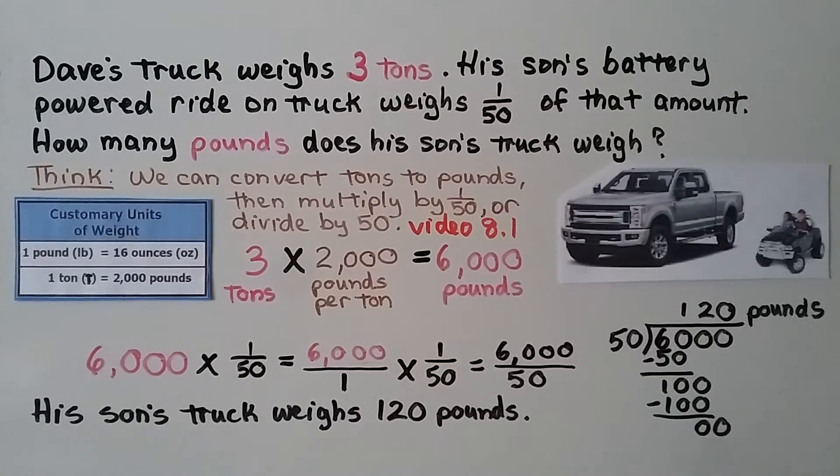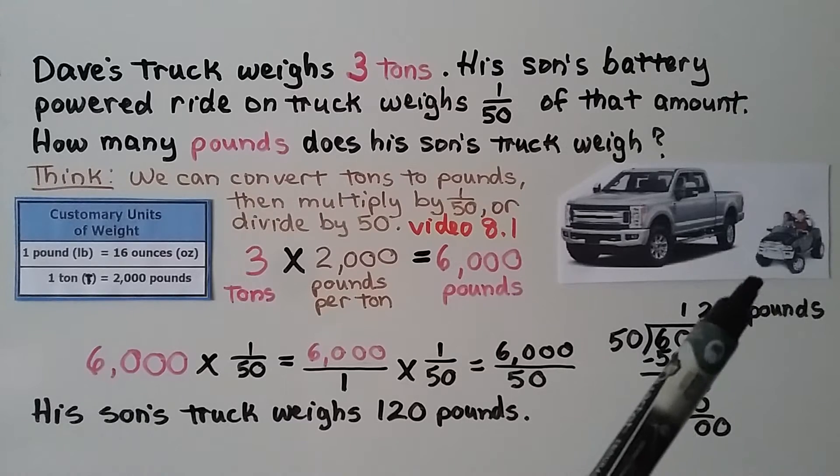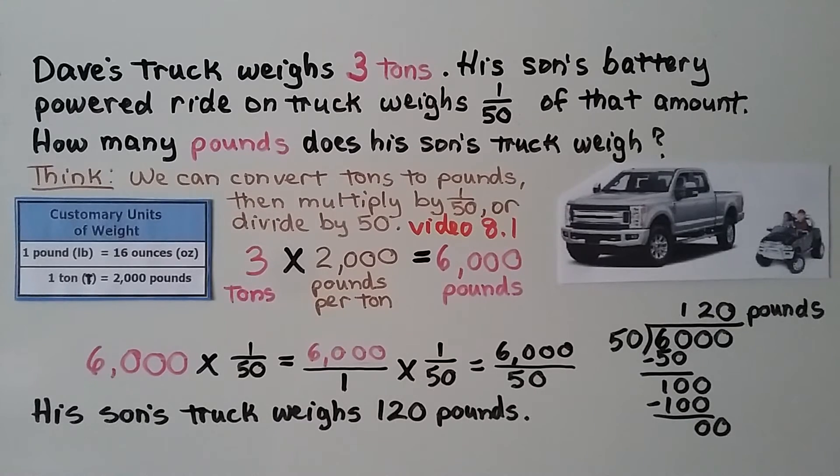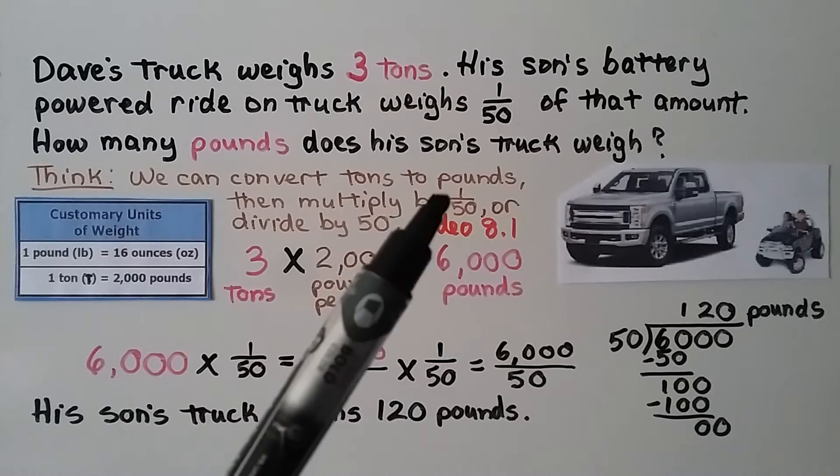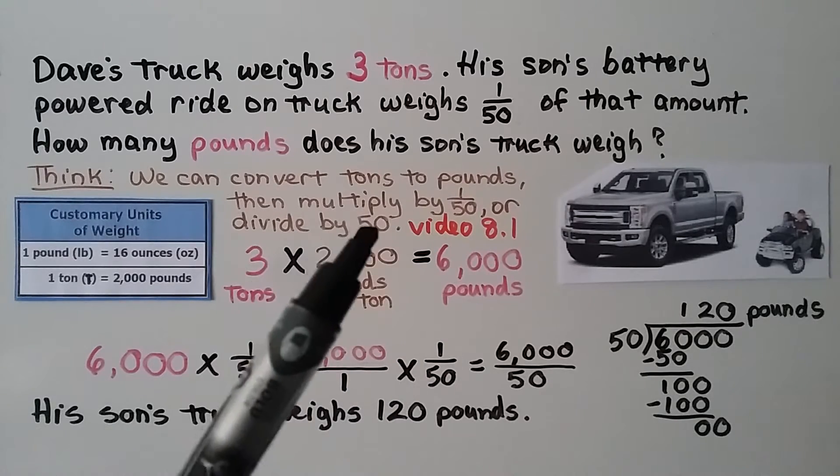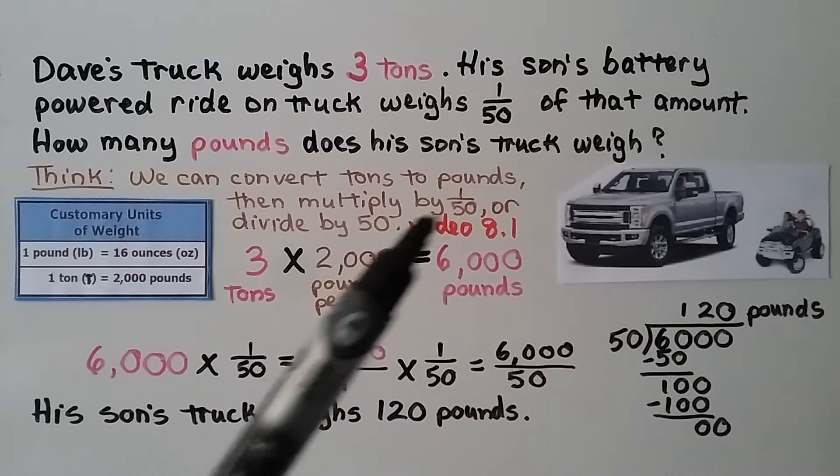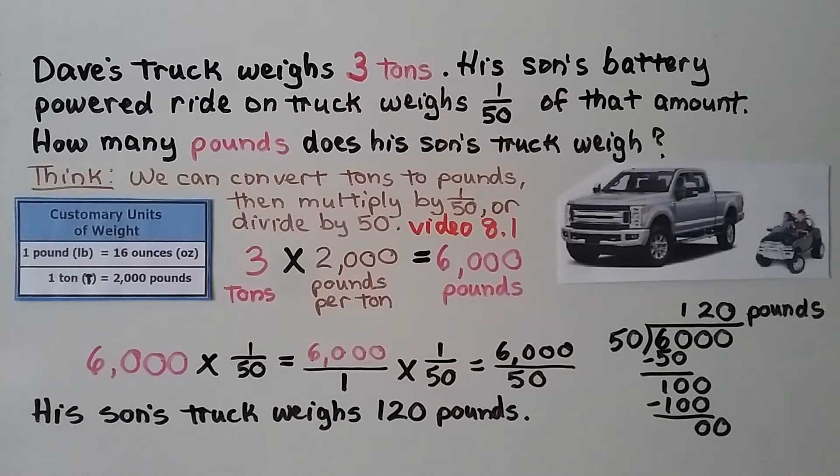Dave's truck weighs three tons. His son's battery powered ride on truck weighs one fiftieth of that amount. How many pounds does his son's truck weigh? So think, we can convert tons to pounds, then multiply by one fiftieth or divide by 50. We learned in video 8.1 that we can multiply by the fraction or divide by the number of the denominator. Either way, we'll get the same amount.